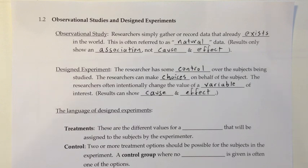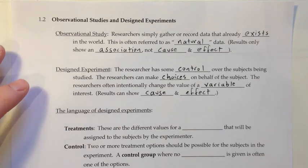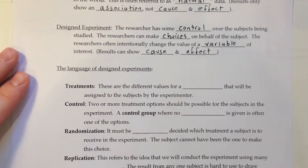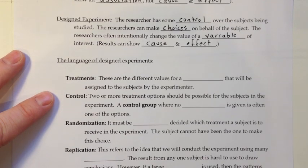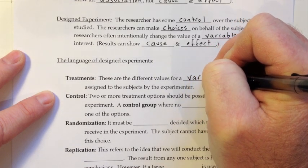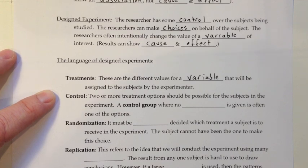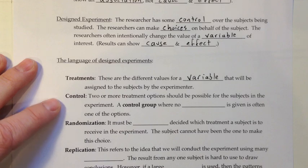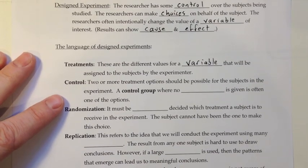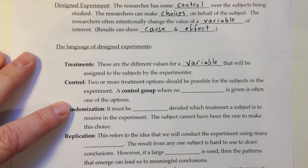In such a designed experiment, you would probably give some participants the actual treatment, but others you would give a placebo — a fake treatment that doesn't really do anything, but still gives them the thought that they are trying to treat their baldness. Treatments are the different values for a variable that will be assigned to subjects by the experimenter. In our example, one treatment would be the real medicine for baldness, and another would be no medicine or a fake medicine. This gets at the idea of control, where you want two or more treatment options, and a control group where no treatment is given is often one of the options.